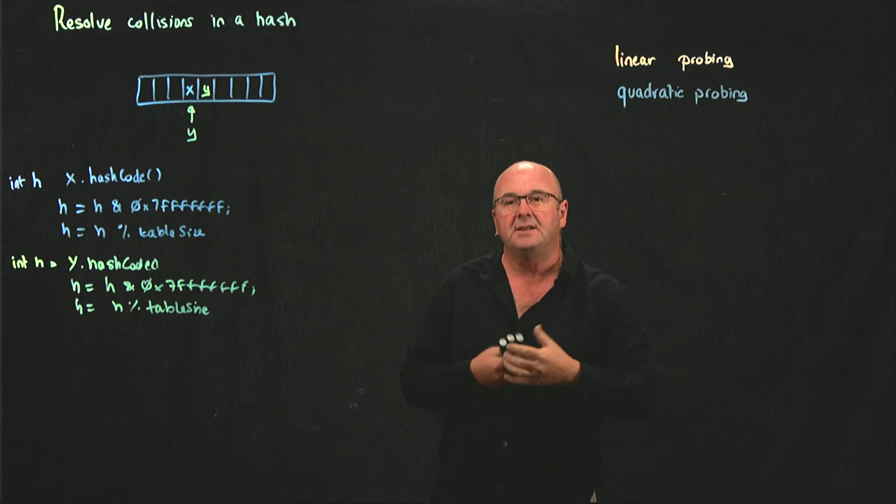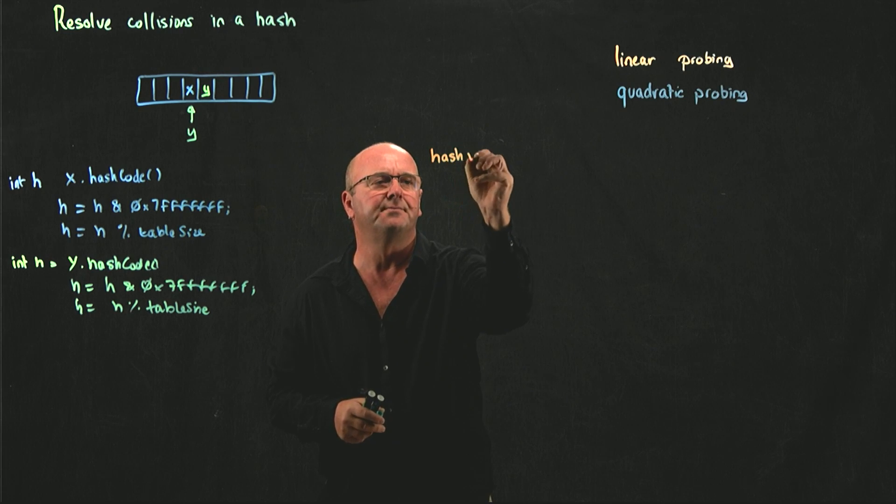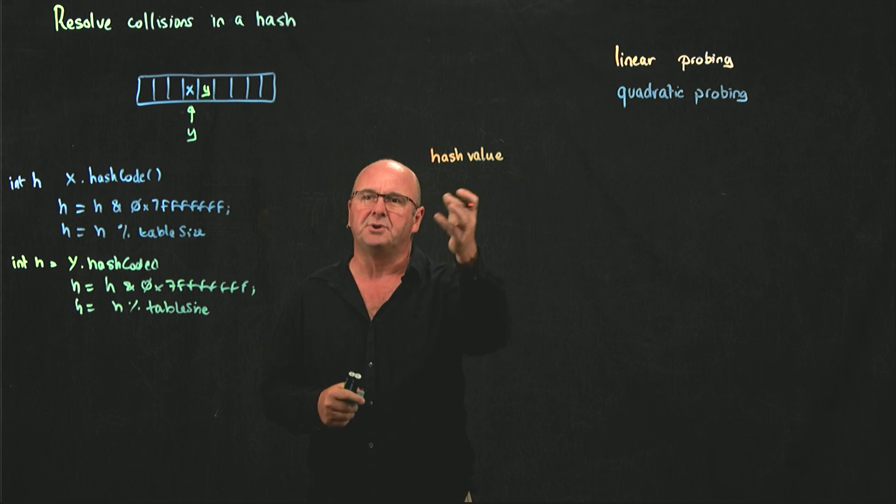And so, the way that quadratic probing goes is that you start with your hash value, the first element you put into that space,